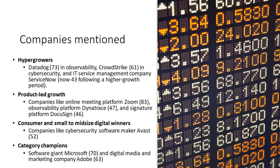Bain identified hypergrowers well above the Rule of 40: Datadog in observability at 73, CrowdStrike at 61, and ServiceNow now at 43 following a higher-growth period. Under product-led growth they list Zoom, Dynatrace, and DocuSign. Consumer and SMB digital winners include Avast in cybersecurity at 52. Category champions include Microsoft at 70 — though Microsoft would hardly be considered a pure SaaS firm — and Adobe, which fits the SaaS label more closely. Note these are point-in-time figures that will change over time.